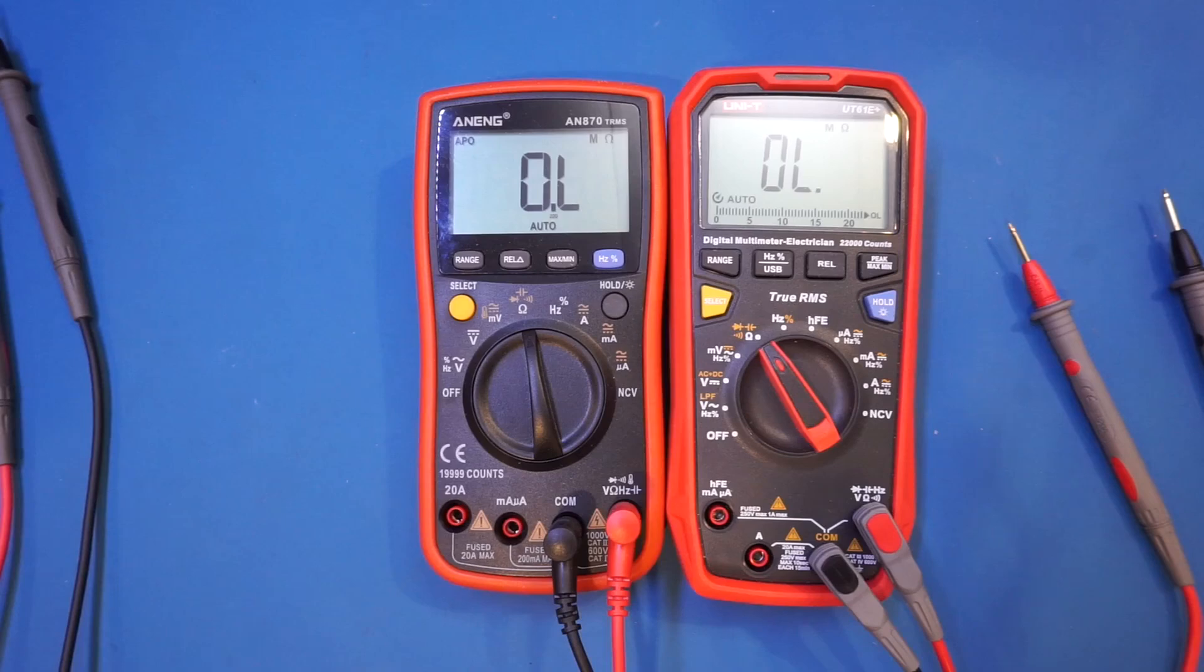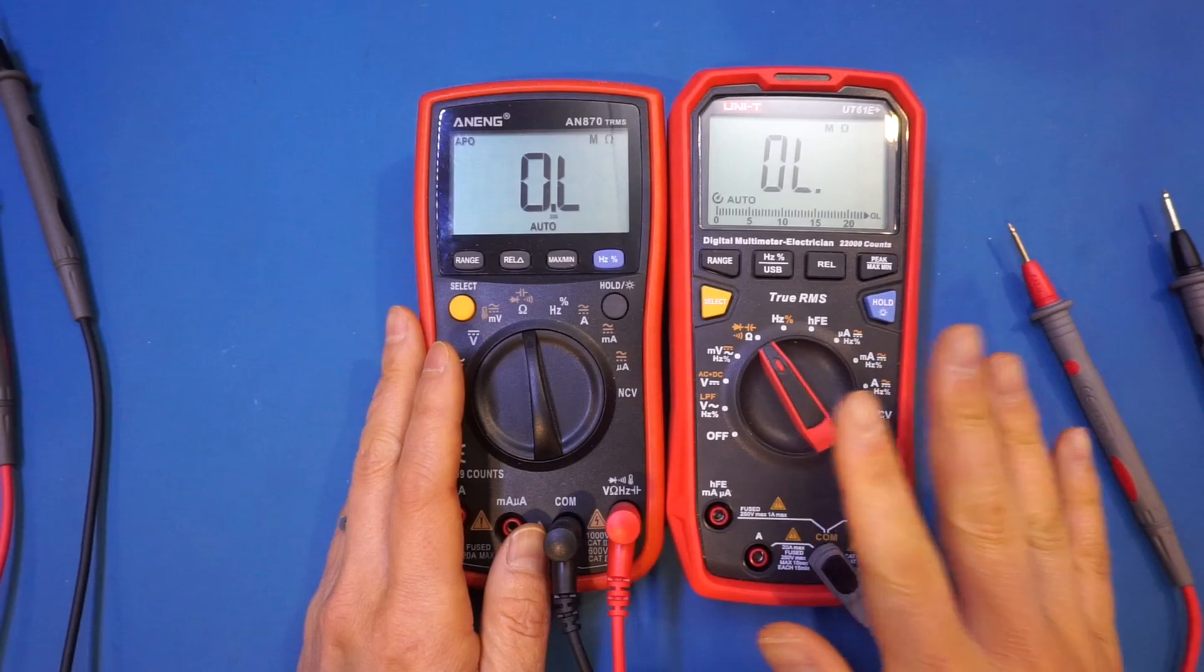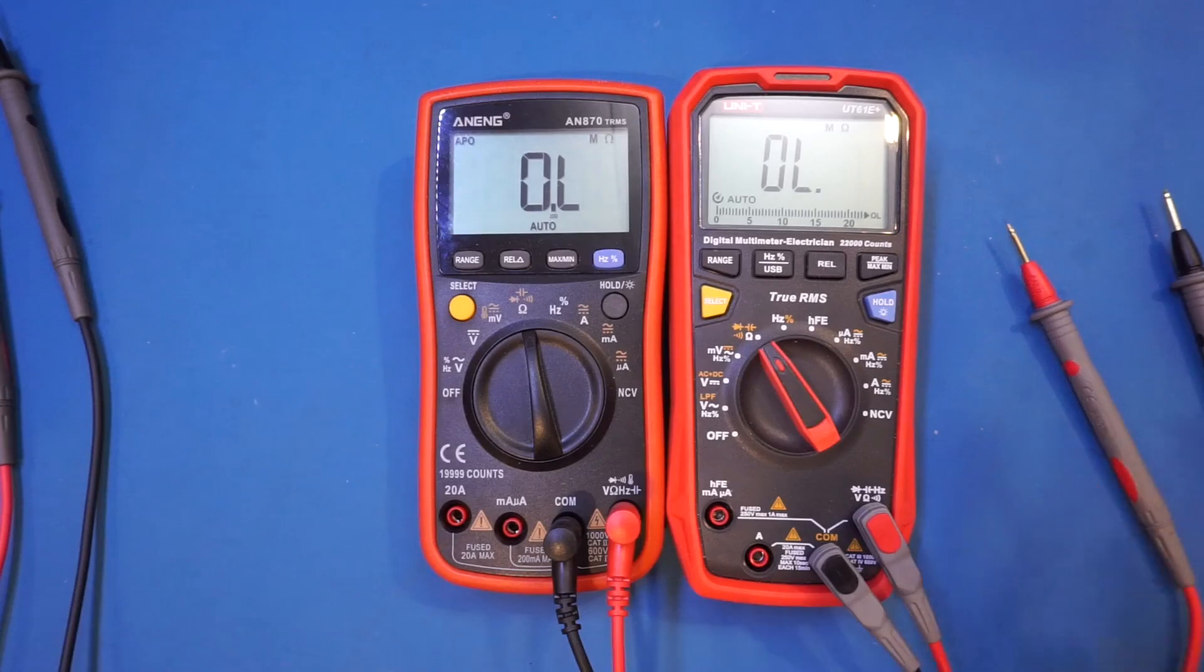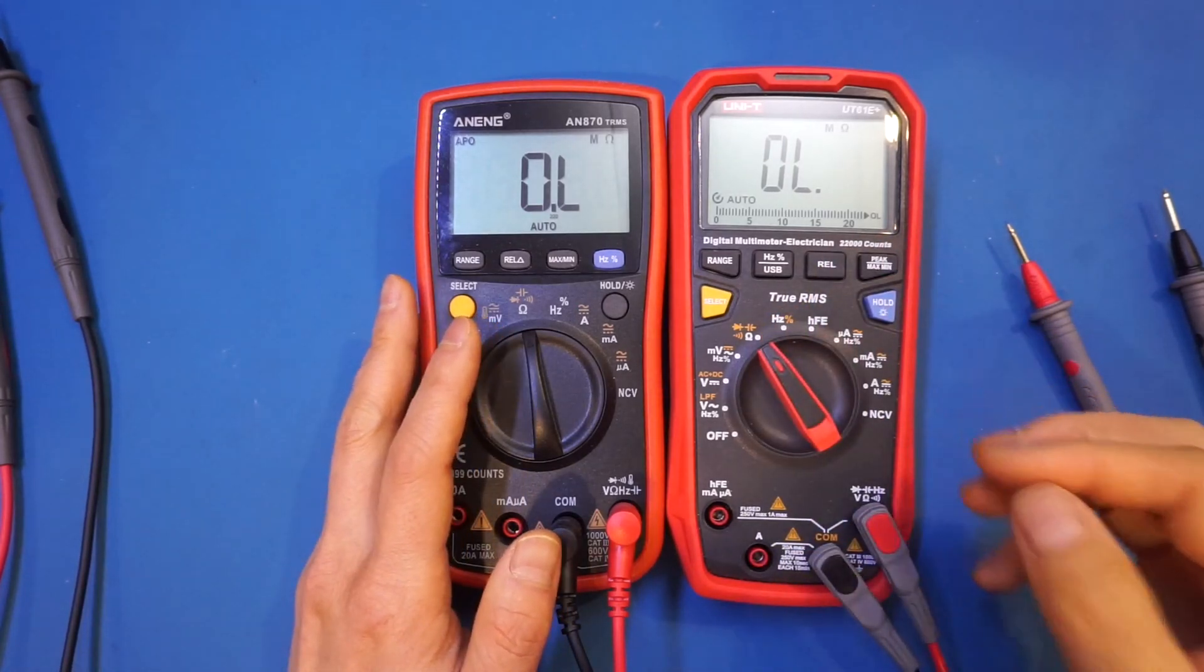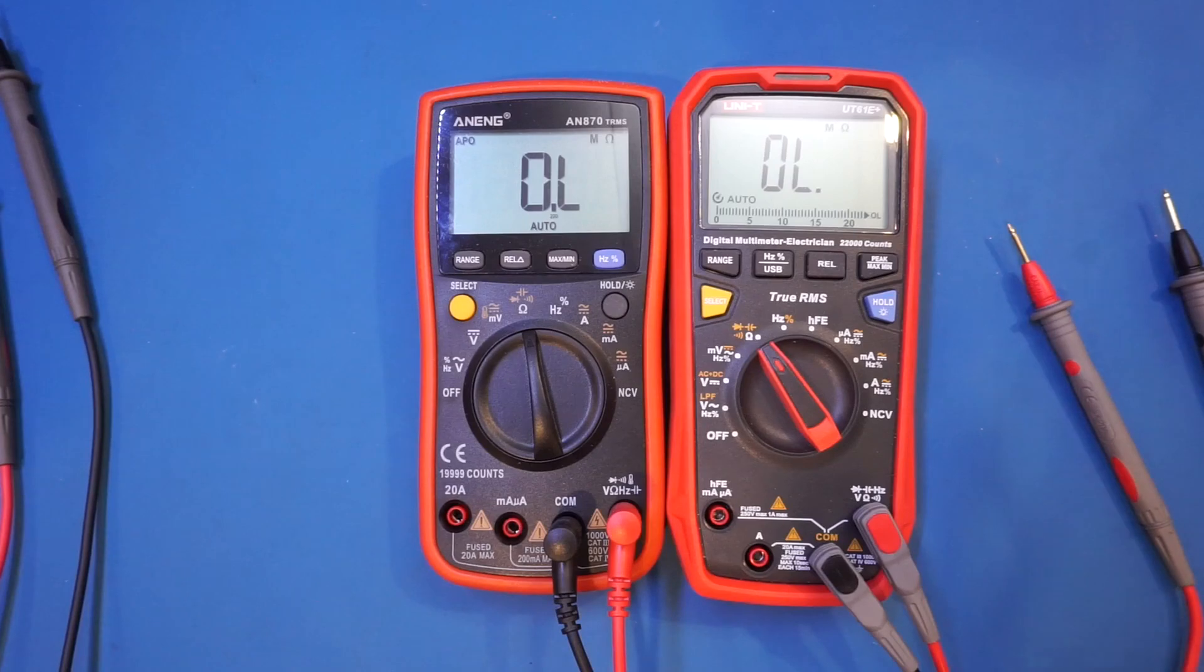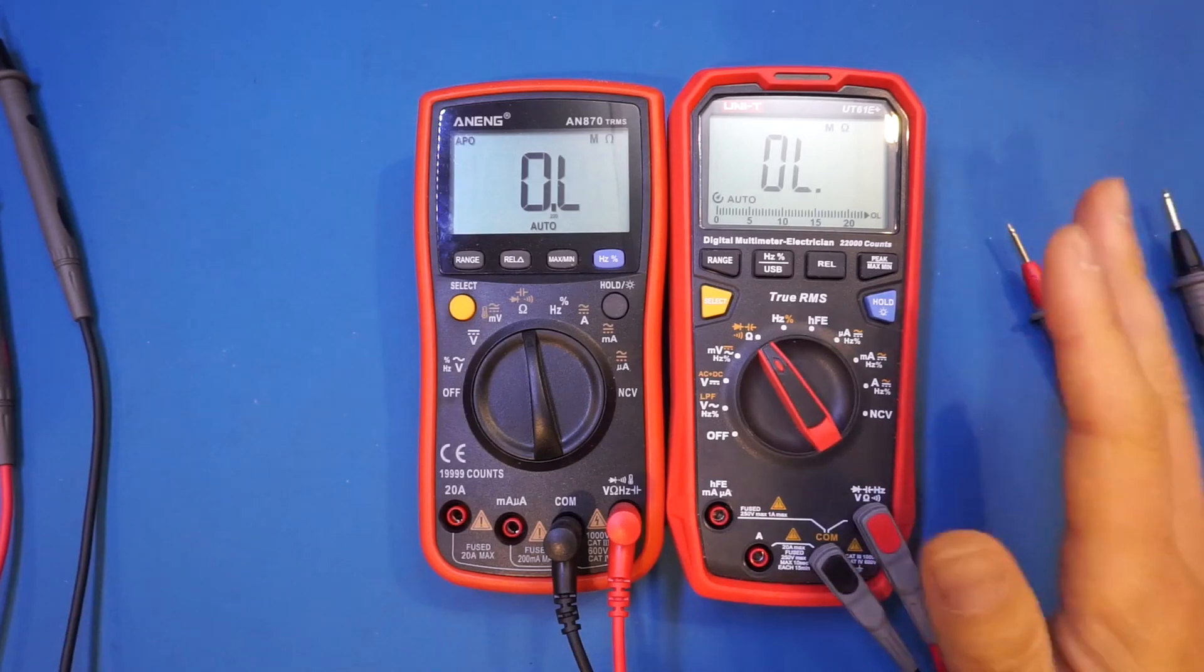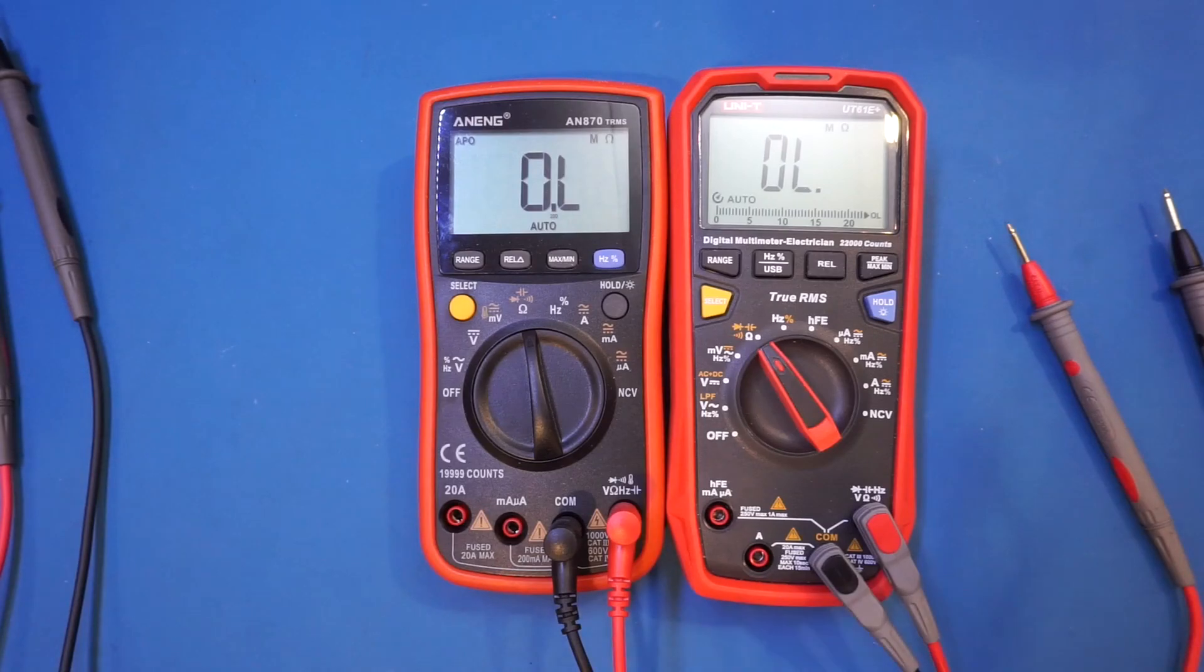As for the capacitance measurement, I think the Unity UT61E Plus also has an advantage here. It can measure up to 220 millifarads, whereas the AN870 can only measure up to 10 millifarads. In terms of the frequency measurement, I think the UT61E Plus also has an advantage, as it's able to measure up to 220 megahertz versus the 10 megahertz for the AN870. Although we saw that above 45 megahertz, the UT61E Plus is also struggling a little bit, but nevertheless is able to measure much higher frequency than the AN870.